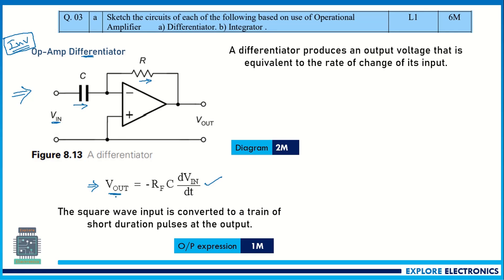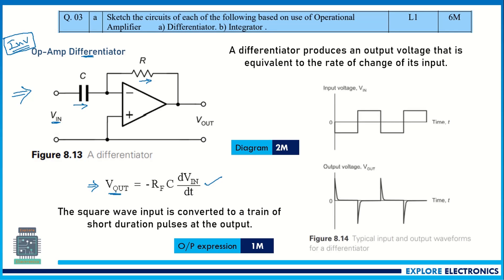You need to write the waveform accordingly. This is the input waveform — if a square wave is given, this is the output we are going to get. The output is equivalent to the rate of change of the input; that is what the differentiator does.